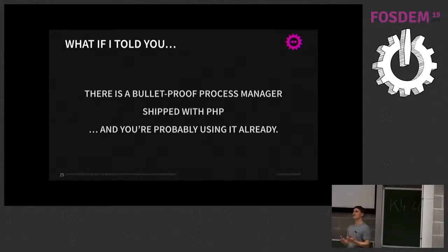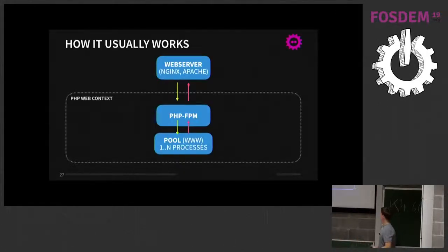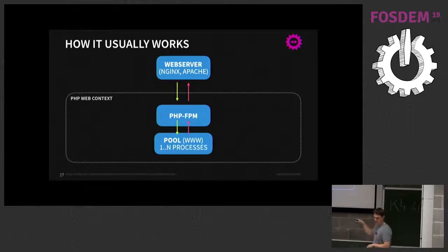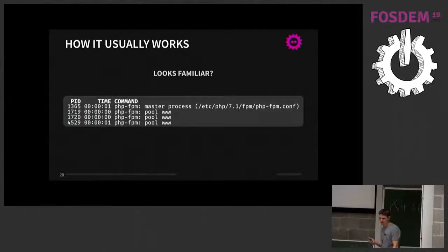PHP-FPM is the PHP FastCGI Process Manager. Normally, a web server like nginx or Apache talks to PHP-FPM via the FastCGI protocol. PHP-FPM has a default pool (www) which spawns one to N processes. In a typical default configuration, you have a master process and three worker processes waiting for requests.